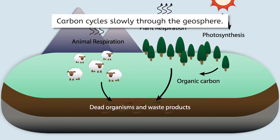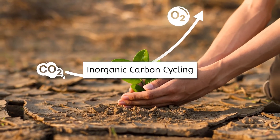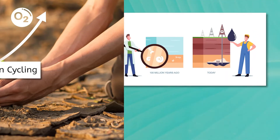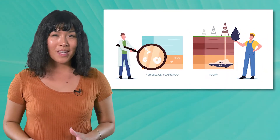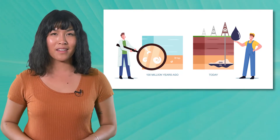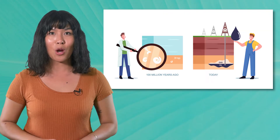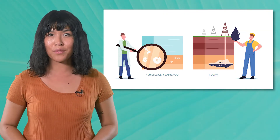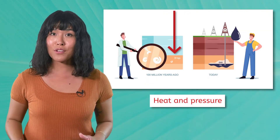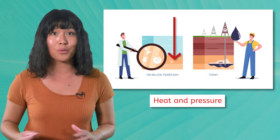Let's take a closer look at how inorganic carbon moves through the carbon cycle. Carbon found in soil, sediment, and rocks in the geosphere is inorganic carbon. Over millions of years, the remains of once-living organisms are buried deeper underground, where high temperature and pressure break them down into coal, oil, and natural gas, forming fossil fuels.